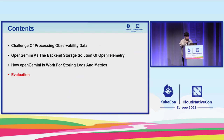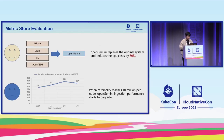For evaluation of the metric store, OpenGemini replaced the original system which contained HBase, Druid, Elasticsearch, and OpenTSDB. It reduces CPU cost by 16%. Unfortunately, we observed that when the cardinality of tag values reaches 10 million per node, OpenGemini ingestion performance starts to degrade — that is the next challenge we must tackle.